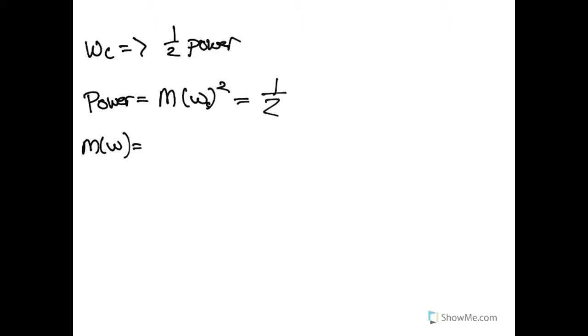And so we can take our definition here of our corner frequency squared, so that would be one over square root of one plus R² C² ω² squared, which is equal to one half. And so applying our square, we get one over one plus R² C² ω² is equal to one half.